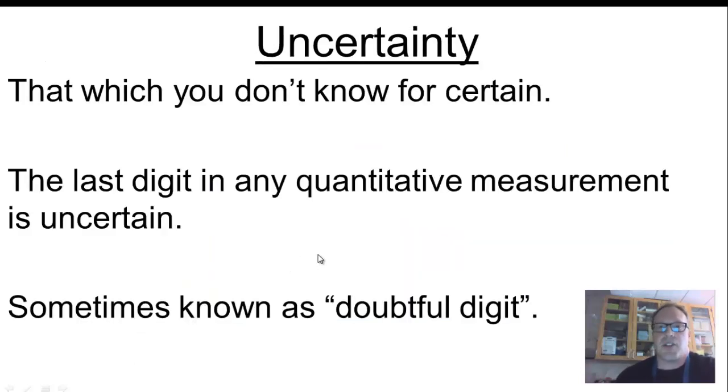Now, let's think about this term uncertain. Obviously, the definition there is that which you don't know for certain. If you're uncertain about something, you don't know something for sure. In any quantitative measurement in chemistry, what I want you to try to do is record a measurement that's precise enough so that you're estimating that last number that you're writing down. So what that means is that last number is uncertain. You might think of it as a doubtful digit.